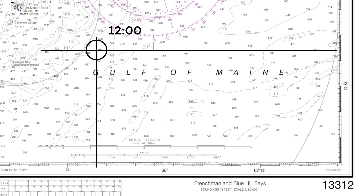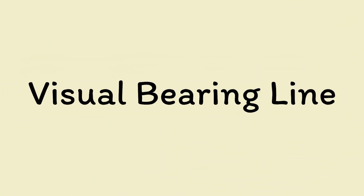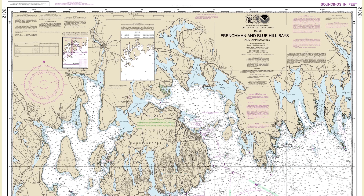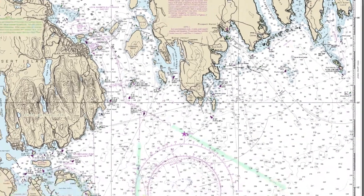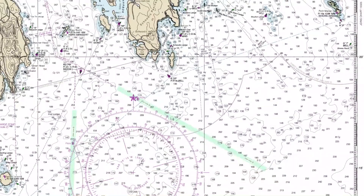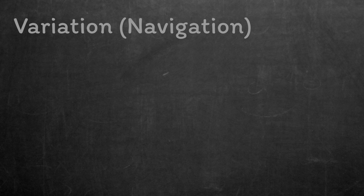The next line of position we're going to discuss is the visual bearing line. For this, you just use your boat's compass to take a bearing of an object. We're going to use the lighthouse here on Petit Manan Island in this example. You can shoot the bearing on your magnetic compass, which gives you a compass bearing, but then you need to correct it to be a true bearing before you can plot it onto the chart.